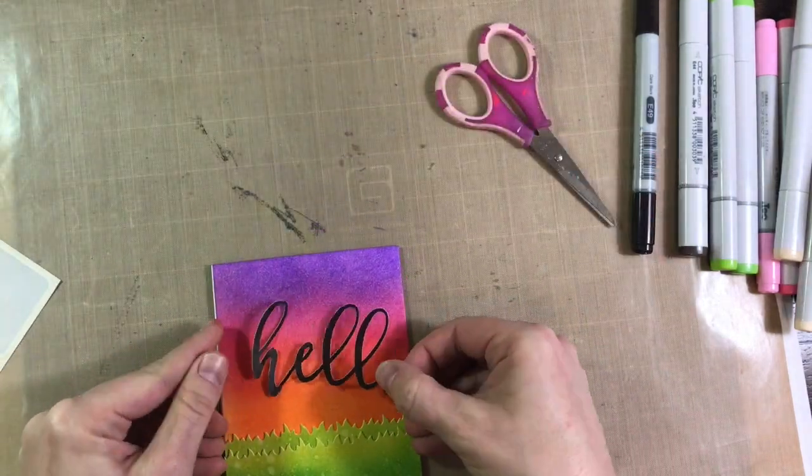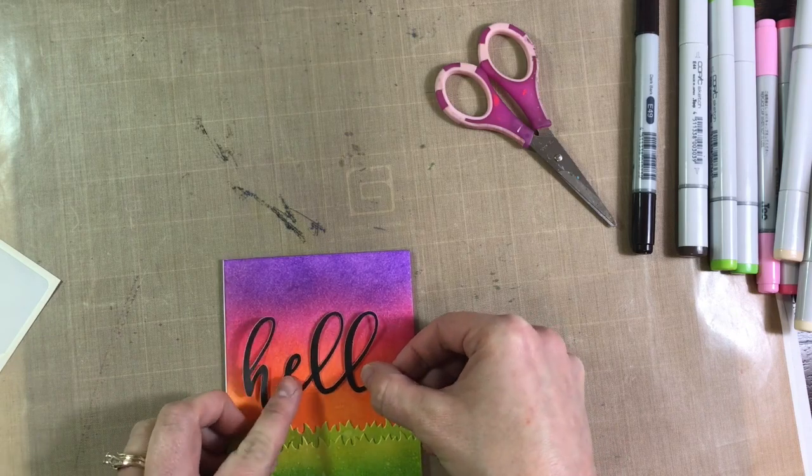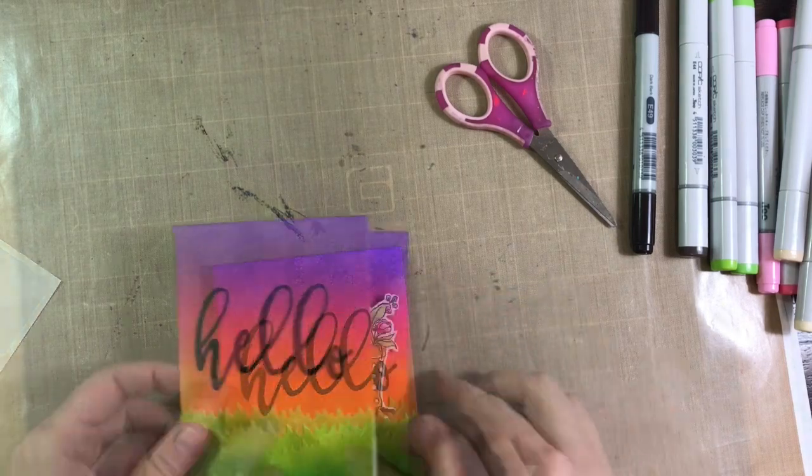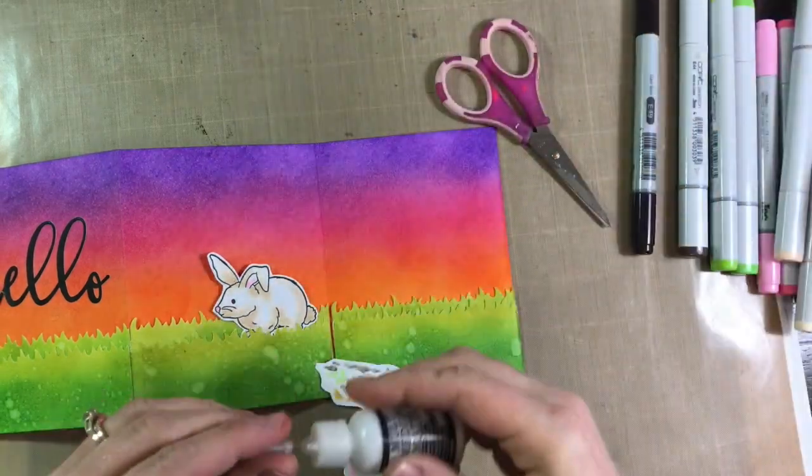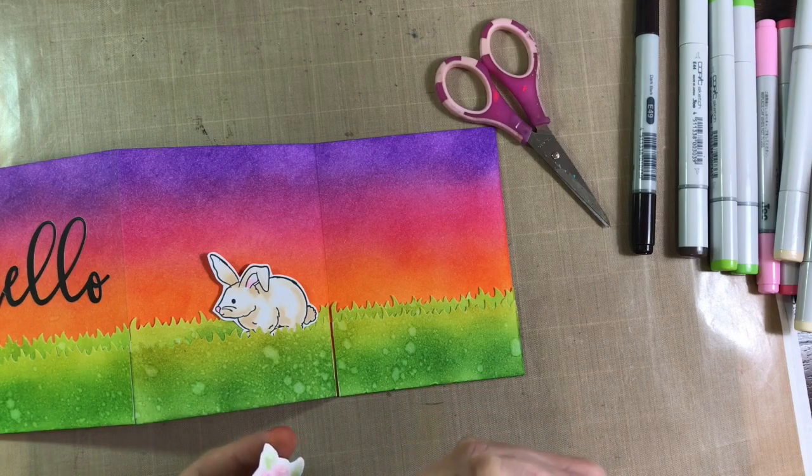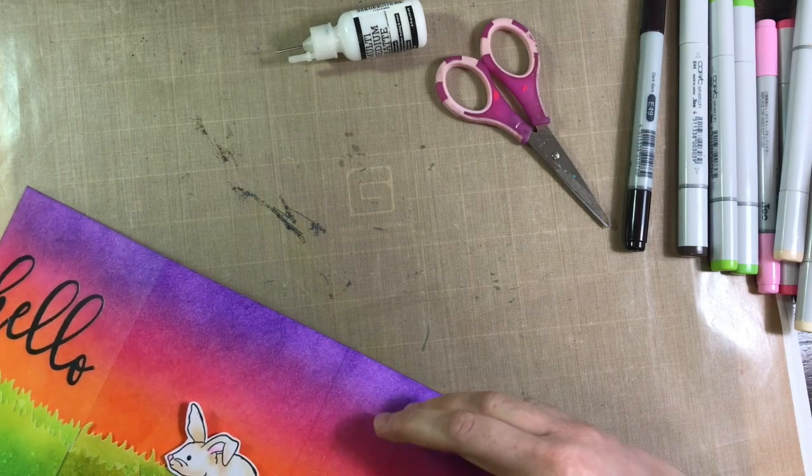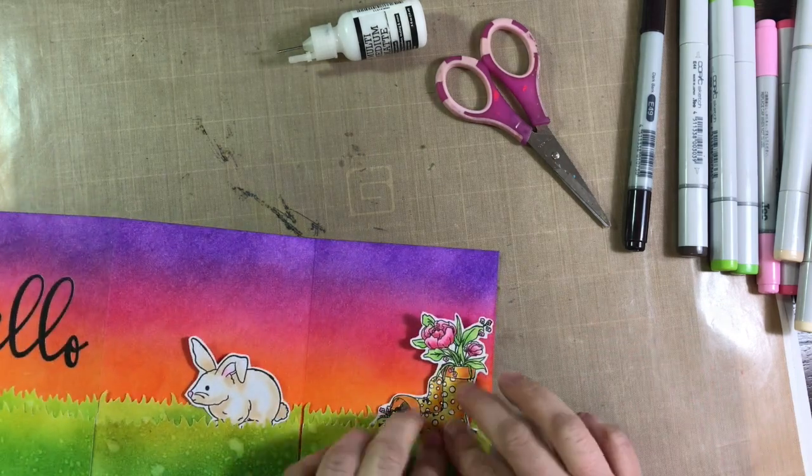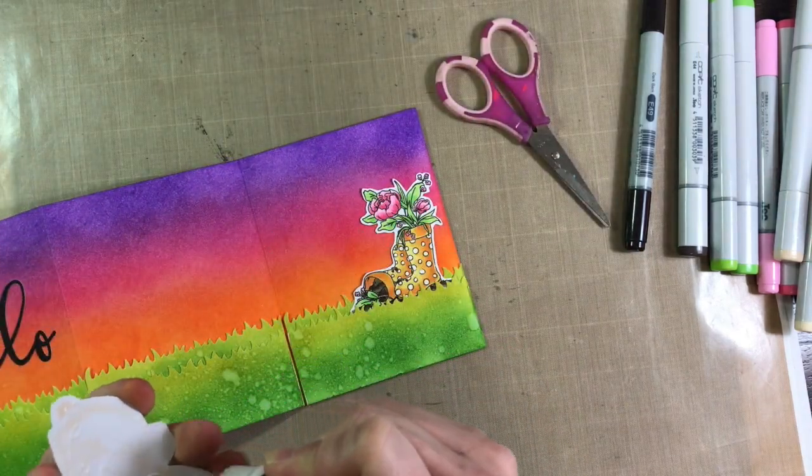But I've moved on, and I have grabbed the Cartabella Spring Market stickers. And it has that hello there. So I thought, well, I'll just grab that off the stickers. I'm going to put that on the front of my card. And I am going to stick my images just in between those two grass levels with some multimedia matte glue, liquid glue. I don't want a whole lot of dimension on the inside. So I'm just going to stick everything down flat. And I'll put my bunny on the second panel.